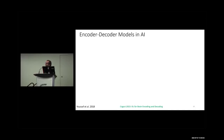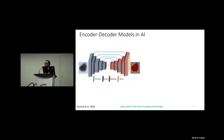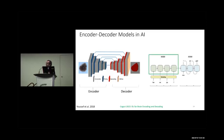Looking at encoder and decoder models in AI: in a CNN, the encoder takes an image and produces a latent representation; the decoder takes that latent representation and reconstructs the image (autoencoder). For machine translation, we know exactly what output to expect at the decoder — the target language. For sentence reconstruction, we expect the same sentence at the decoder. In AI, we always know what to expect from the decoder.